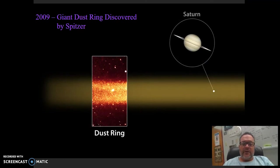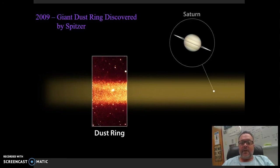This was a fairly new discovery. This giant dust ring, I haven't heard much about it, but it was found in the infrared by the Spitzer Space Telescope. Pretty cool.